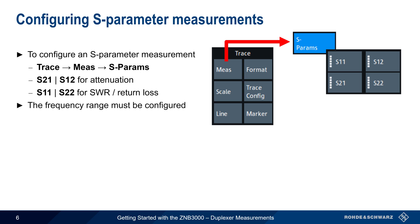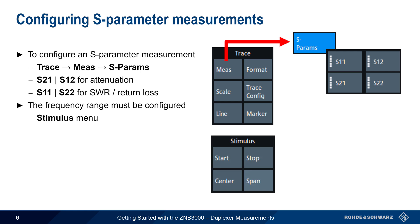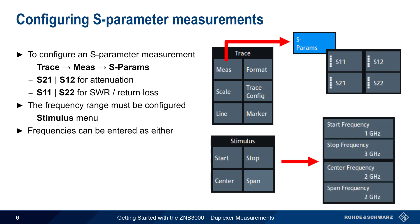We also need to configure the frequency range for the measurement. This can be done under the Stimulus menu. Frequencies on the ZMB3000 can be entered in two ways: either as start and stop frequencies, or as a center frequency and span. For example, start and stop frequencies of 1 GHz and 3 GHz are the same as a center frequency of 2 GHz and a span of 2 GHz.